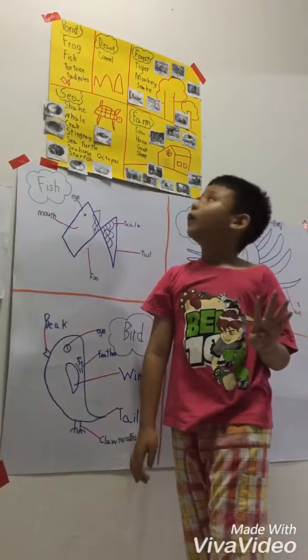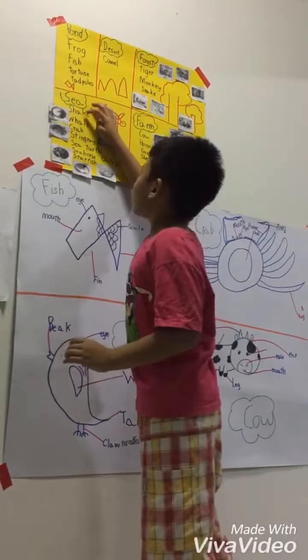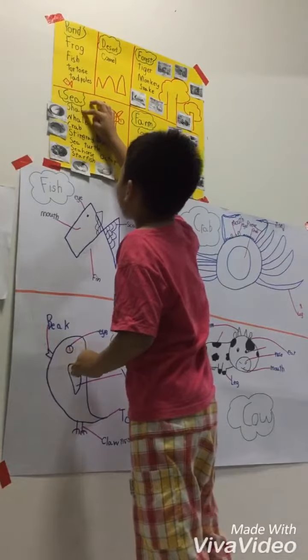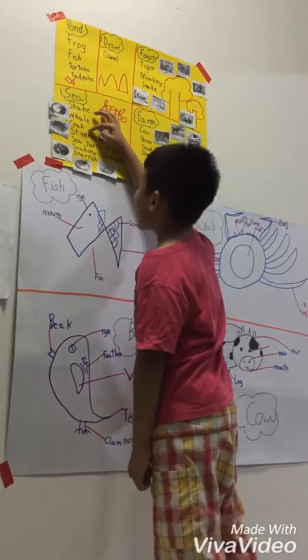Number four, sea. Number one, shark. Number two, whale. Number three, crab.